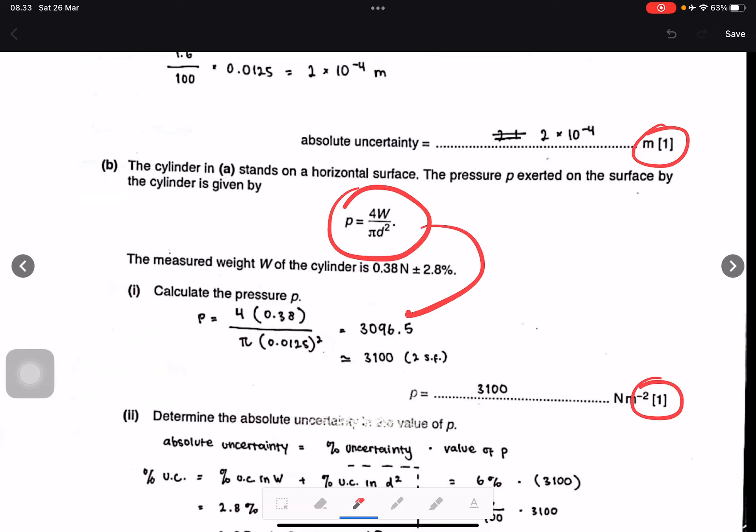P equals 4 times 0.38 divided by π times 0.0125 squared. We get 3096.5. In two significant figures, this is 3100. Why do we use two significant figures? On this side you see this is two significant figures, and this is also two significant figures.